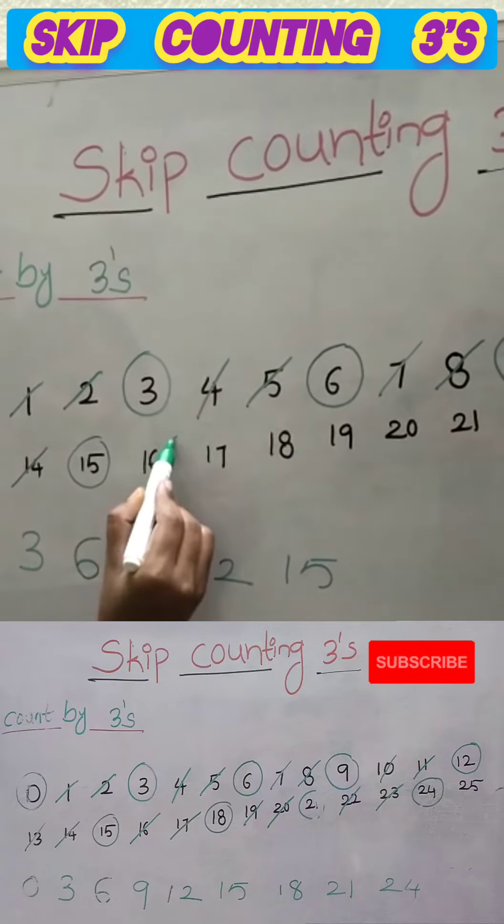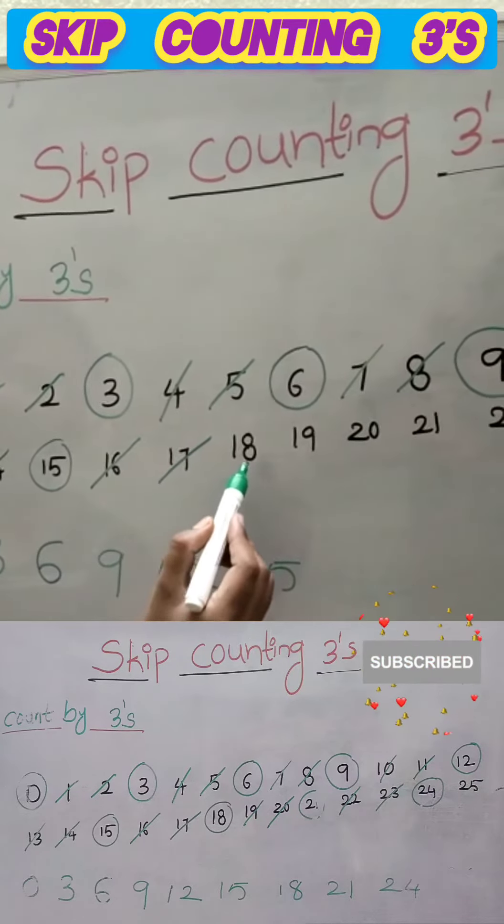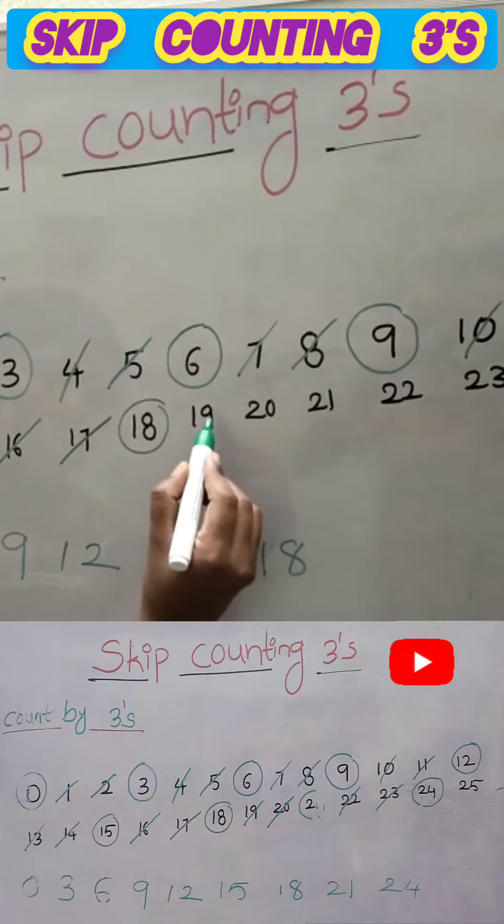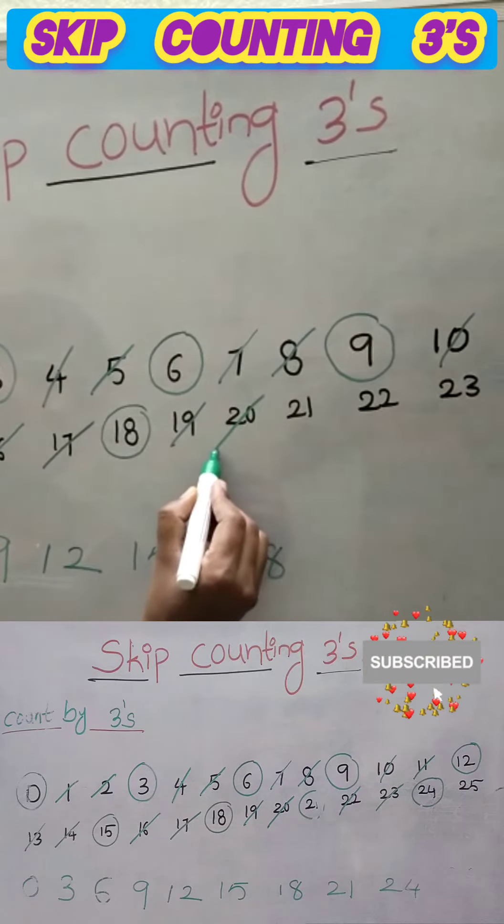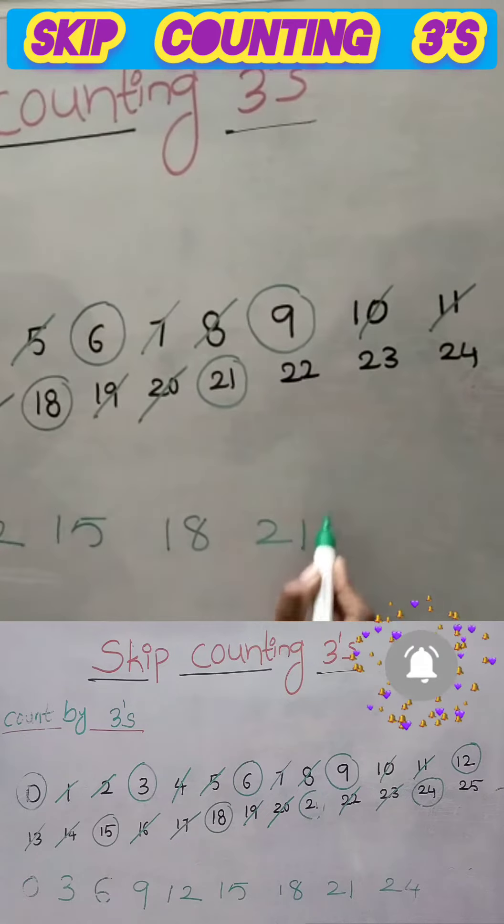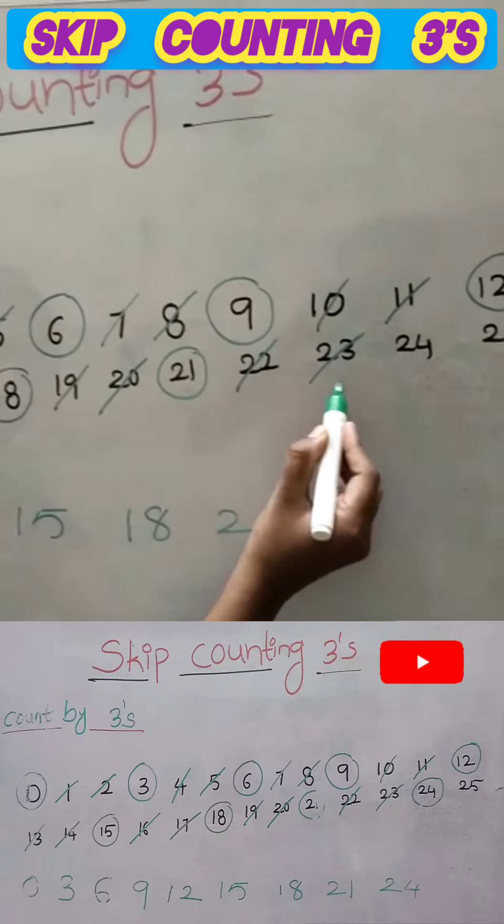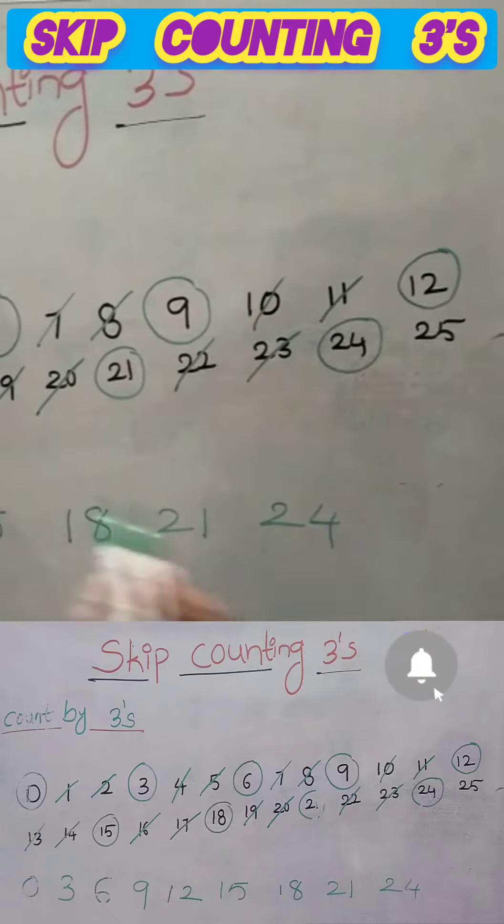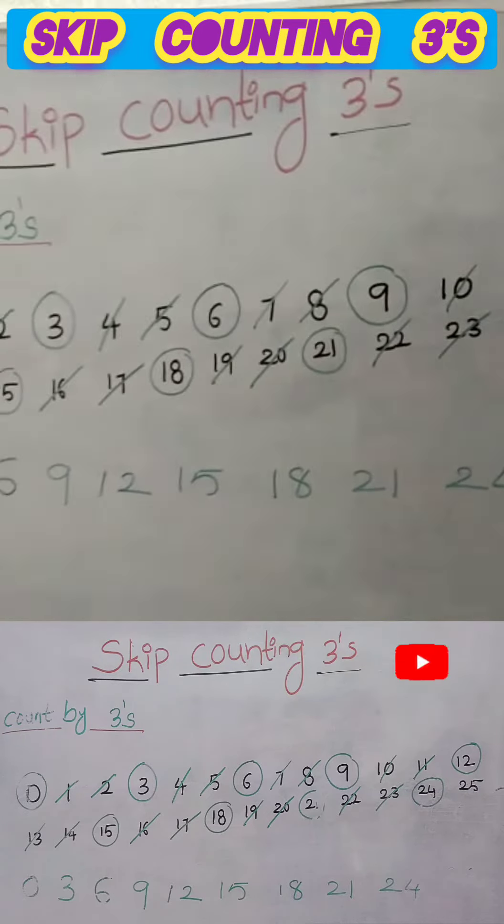Next skipping 16 and 17, write 18. Skip 19, 20, write 21. 22, 23, next number 24. Skip count by threes, count by threes.